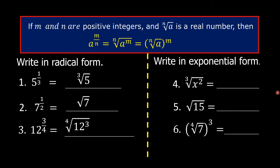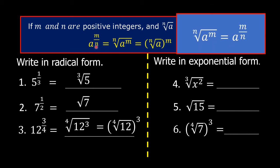This can also be written as open parenthesis, 4th root of 12, close parenthesis, raised to the exponent of 3. Next, write in exponential form. Number 4: the cube root of x squared. If a raised to m over n is equal to the nth root of a raised to m, then the nth root of a raised to m is equal to a raised to m over n, by the symmetric property of equality.